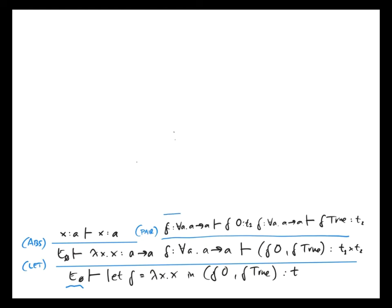Typing this requires us to use the function application rule, because f of 0 is a function application. How do we type 0? 0 is a constant, so we immediately get that in this type environment, 0 has type int. This was the constant rule.